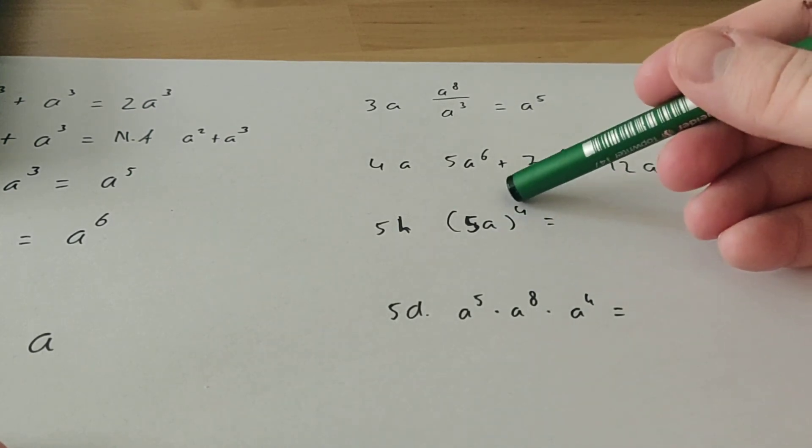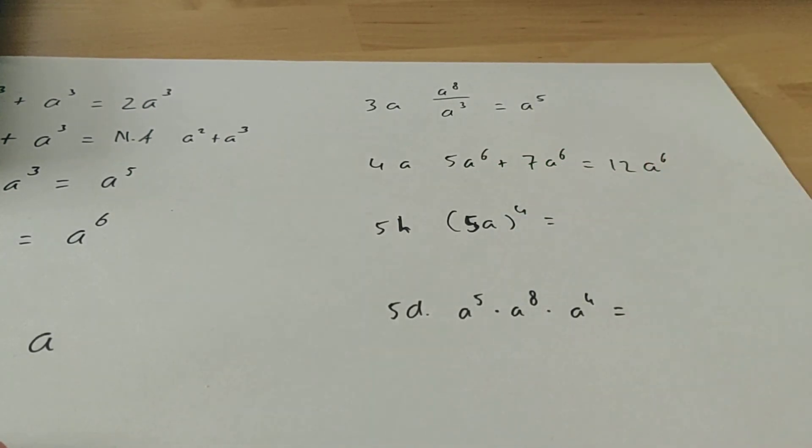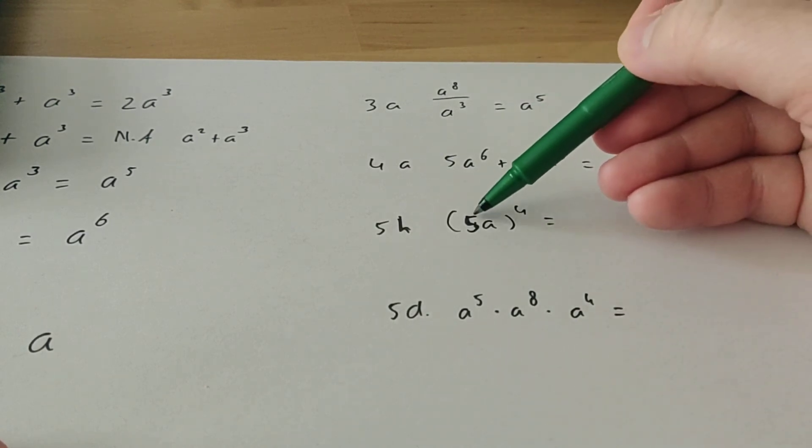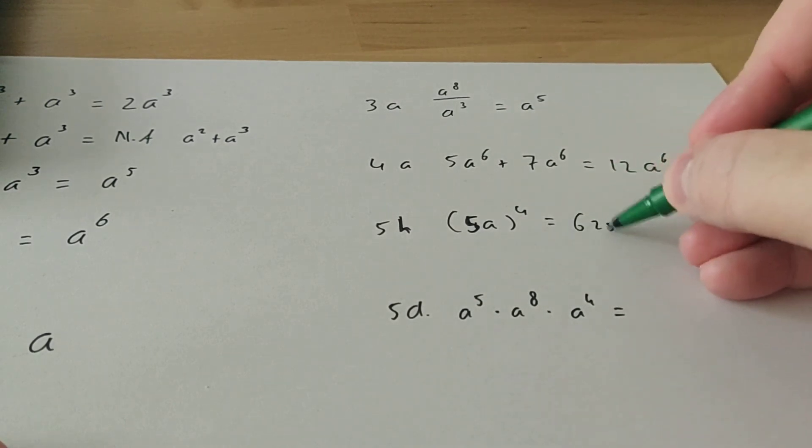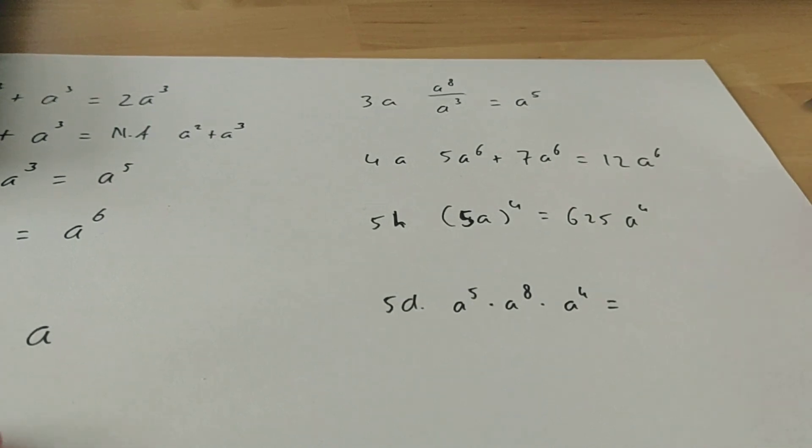Then here we have a power in brackets, and then the power is there. So we have 5 a to the power of 4. That means you have to do 5 to the power of 4. So you can calculate that with your calculator. We did 625. And then we have 8 to the power of 4.